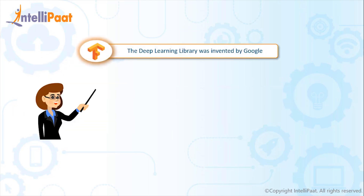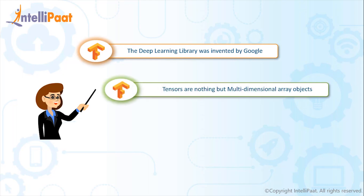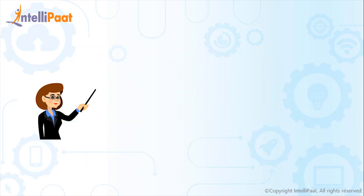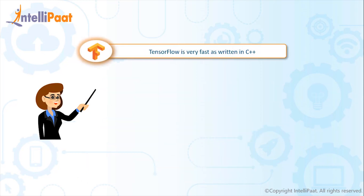TensorFlow is a deep learning library developed by Google in 2015 and was released as an open source platform. Tensors are nothing but multi-dimensional arrays, and the reason behind calling it TensorFlow is that it takes input as a multi-dimensional array and processes through it. In computational graphs, nodes represent operations and edges represent tensors. It is essentially used to generate computational graphs.